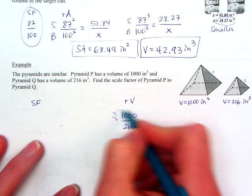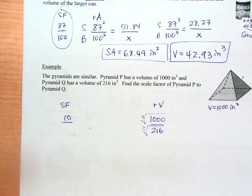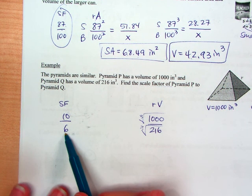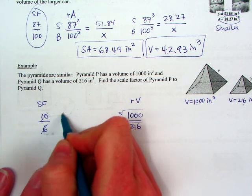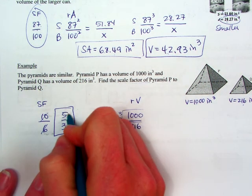So taking the cubed root of both of these guys, I get 10 over and the cubed root of 216 is 6. And so for scale factor, although you can leave me 10 to 6, it is preferable if you reduce. So dividing each of those by 2, I would get 5 over 3. So that is my scale factor in inches.